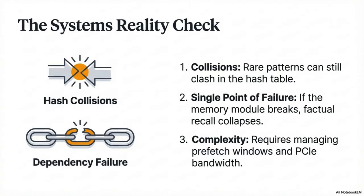The ablation study showed a really interesting potential bottleneck — this clean responsibility split. When they deliberately turned off the Enneagram module, factual knowledge collapsed. But reading comprehension, handled by the backbone, was mostly fine. So you've created a new single point of failure: the factual layer now depends entirely on that conditional memory module, and if it fails, factual recall just falls off a cliff.